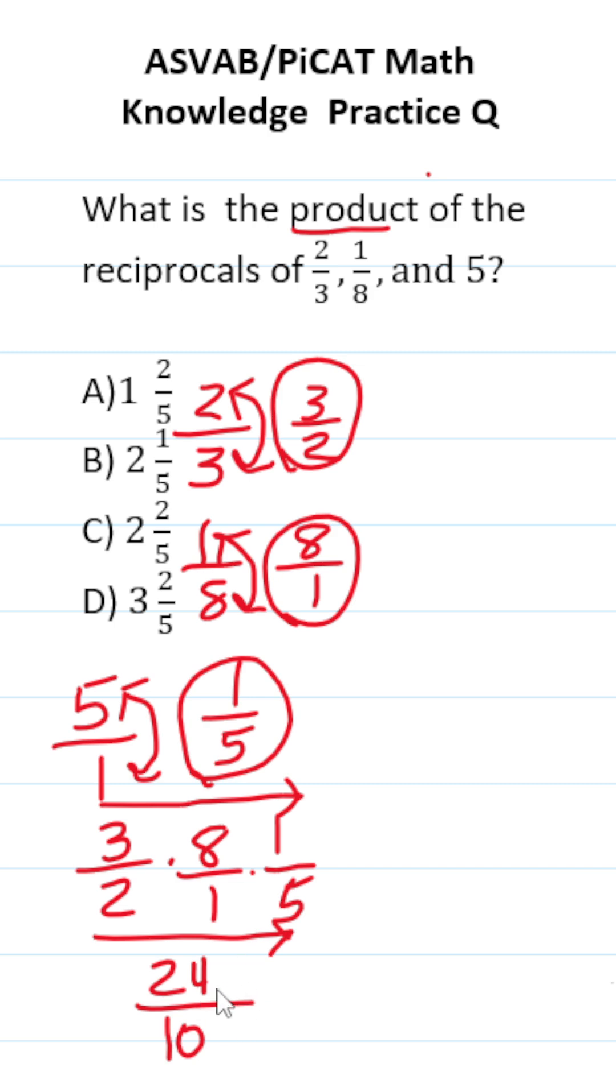That said, we want to express this as a mixed number. So the first thing I'm going to do is reduce this by a common factor of 2 to make the math a little bit easier. This becomes 12 over 5.